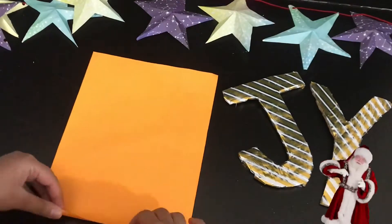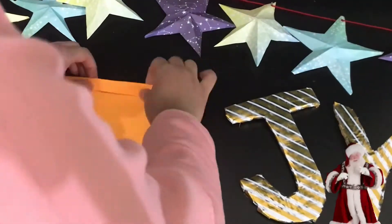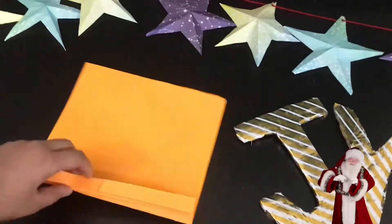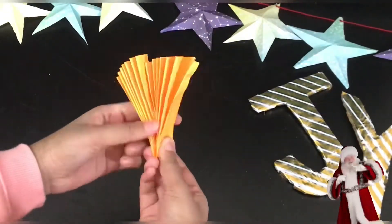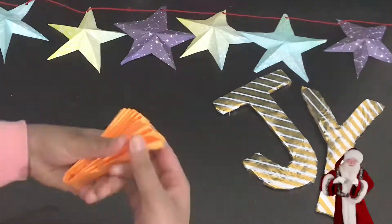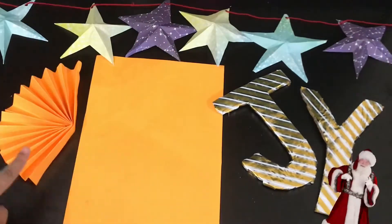Next, take an A4 size sheet and start doing the fan folding method, which is flipping it, folding it, and once again flipping it. Repeat this with the whole sheet, then fold it from the middle and paste it using some glue. When you open it, a semicircle is formed. Make another semicircle with another sheet.